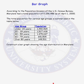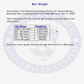Here's what we have. According to the Population Division of the U.S. Census Bureau, Maryland had a total population of 5,296,486 people as of April 1, 2000. The total population for various age groups is summarized in the table below. For instance, there were 1,492,965 people under the age of 20 in the state of Maryland.